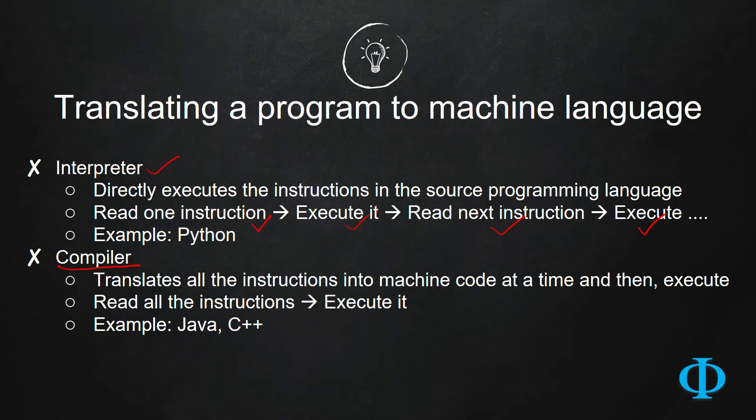It's just like you have an English paragraph and you want to convert it to Spanish. Instead of converting it line by line, you read the entire paragraph and then translate it to Spanish. An example of an interpreted programming language is Python, and an example of a compiled programming language is Java, C++.